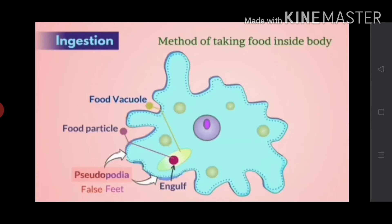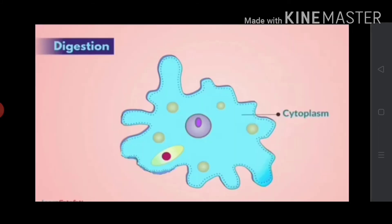Amoeba encircles its pseudopodia around the food particle and takes it inside its body. We say that amoeba engulfs the food. It results in the formation of a food vacuole which contains the food particle.